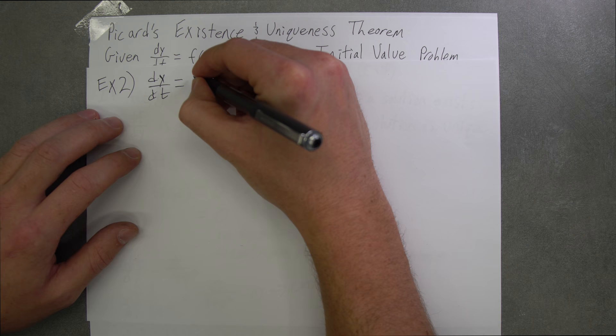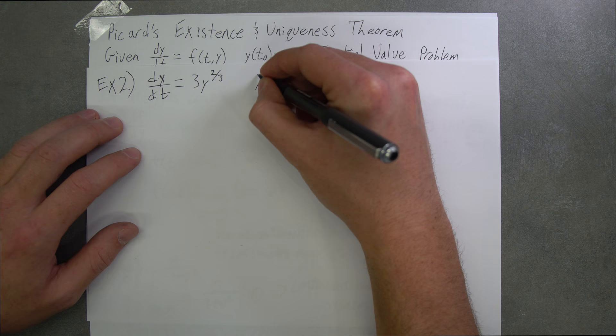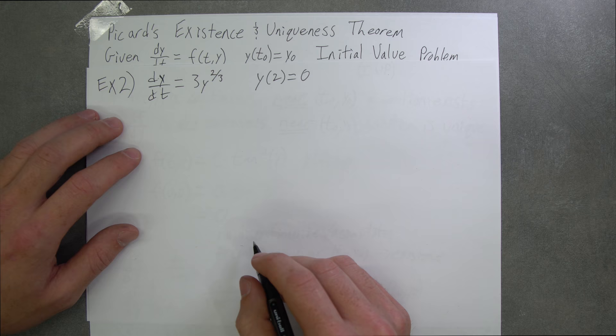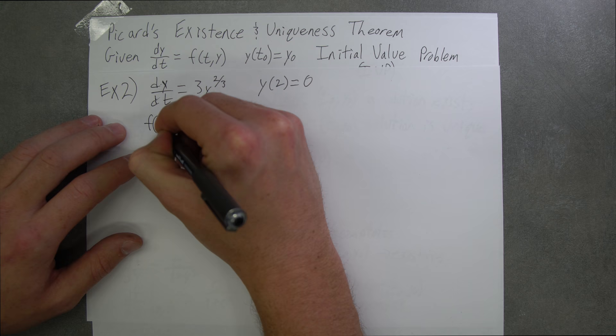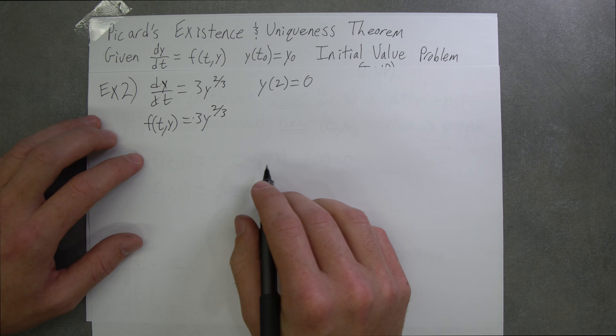Let dy/dt equal 3y to the 2/3 power. So here we are in this form. Our f(t,y) is equal to 3y to the 2/3.